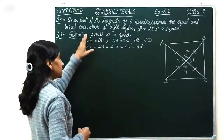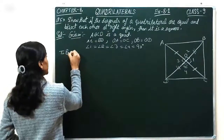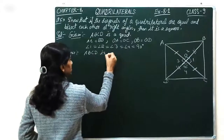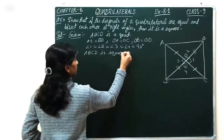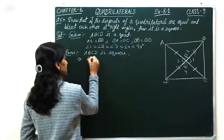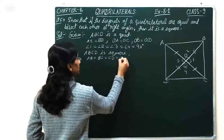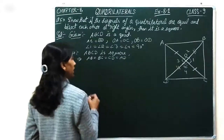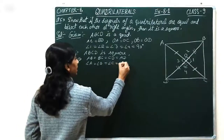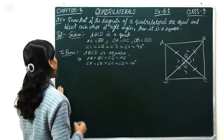We have to prove that quadrilateral ABCD is a square. We have to prove that all sides AB, BC, CD, and AD are equal, and that angles A, B, C, and D are all 90 degrees.